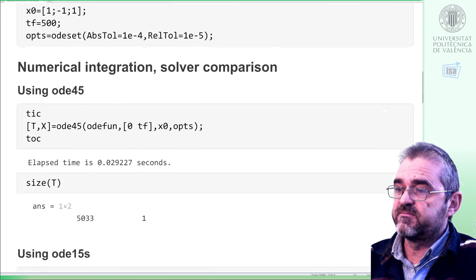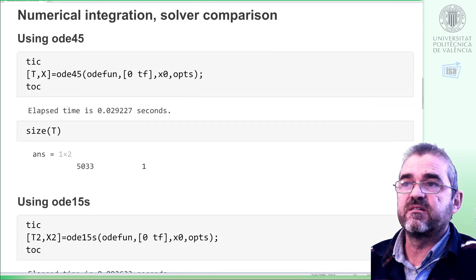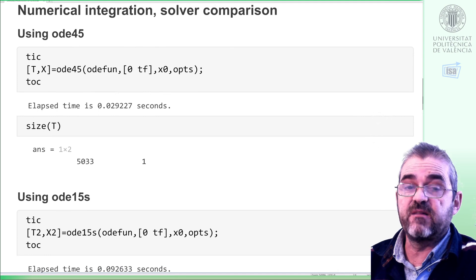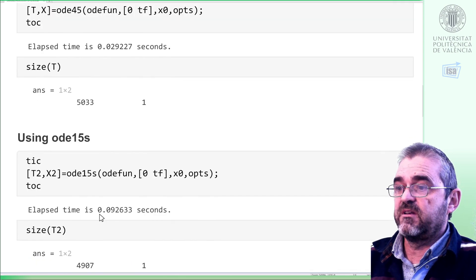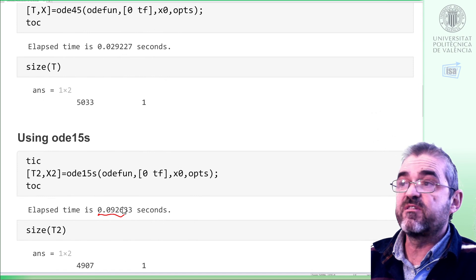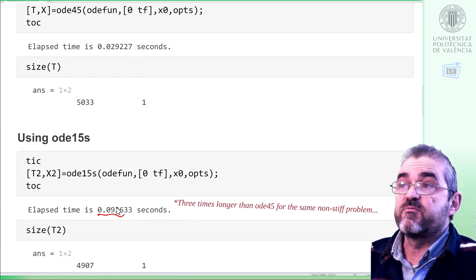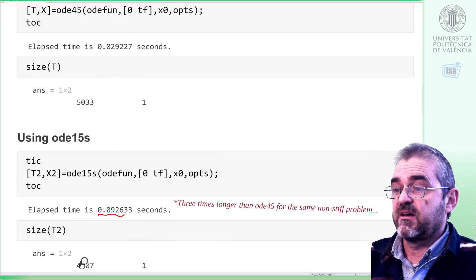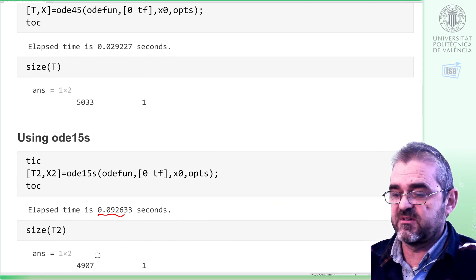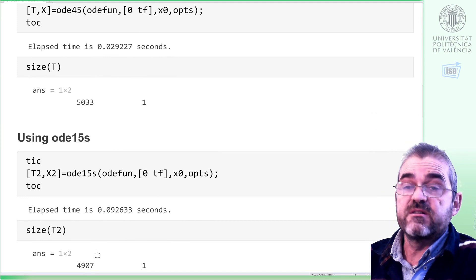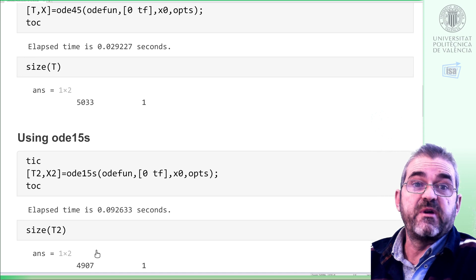If I compare another solver, ODE15S, which is for stiff differential equations, but I am using it in a non-stiff situation. Well, at the end, it took 90-something milliseconds instead of 30, so it took like three times longer to execute, and around 5000 points, so more or less the same. So in this non-stiff case, it seems that ODE45 had the winning hand.